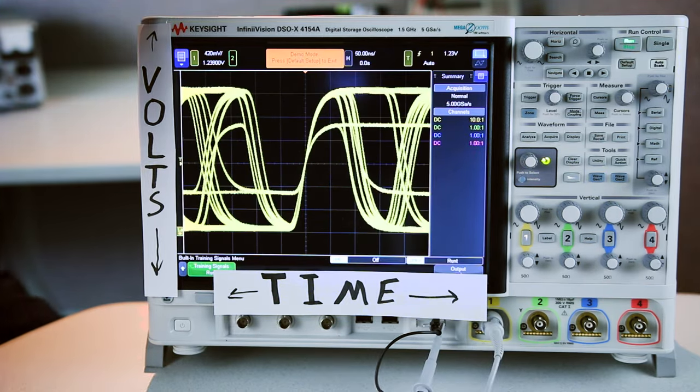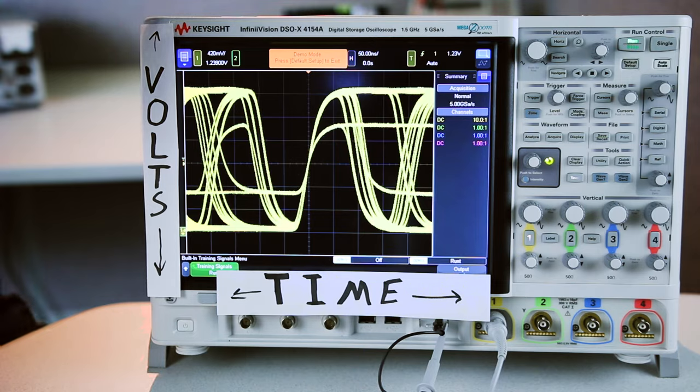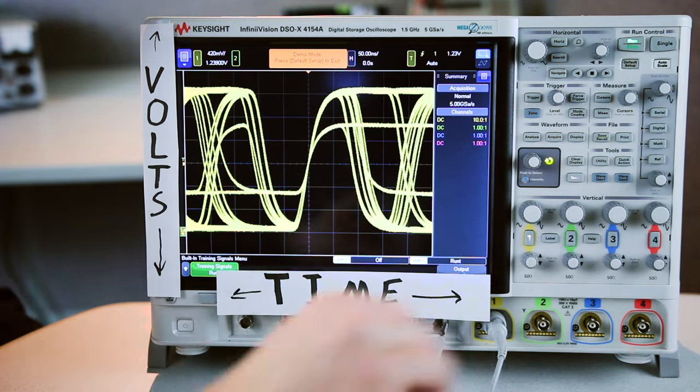Now we're looking at something more complex than a sine wave. Let's say you want to just look at one of these signals. You want to stop it and see what's going on. The scope has a special run stop button that will pause the acquisition and pause the waveform on the screen.